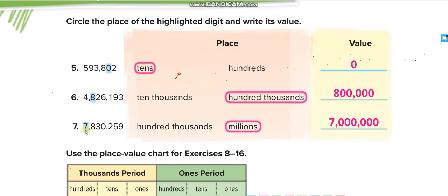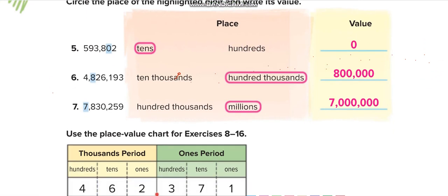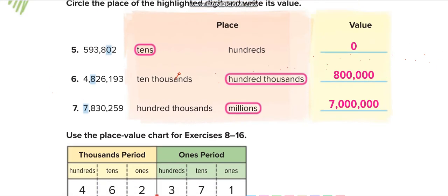The place is millions, and the number there is seven — so seven million. The video is getting longer than ten minutes, so I have to stop here and continue in Part 2. Thank you so much, guys — have a nice day, and wait for the Part 2 video for Lesson 1!